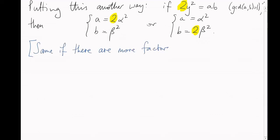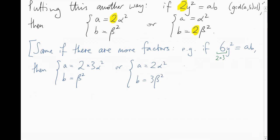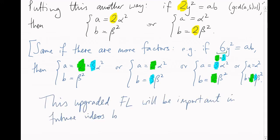Now, the same thing happens if there are more factors, by the way. For example, suppose 6y squared equals a times b, with greatest common divisor of a and b still equal to 1. Then we have an extra factor of 2 and an extra factor of 3 on the left. So, we have to make sure that they're both accounted for on the right. There are four possibilities here. Either a takes them both, or a takes the 2 and b takes the 3, or a takes the 3 and b takes the 2, or b takes them both. In each case, we have a 2 and a 3. This upgraded fundamental lemma will be important in future videos as well.